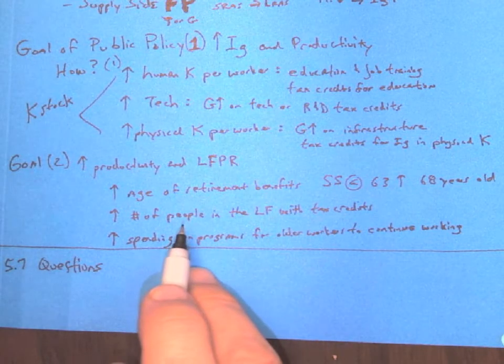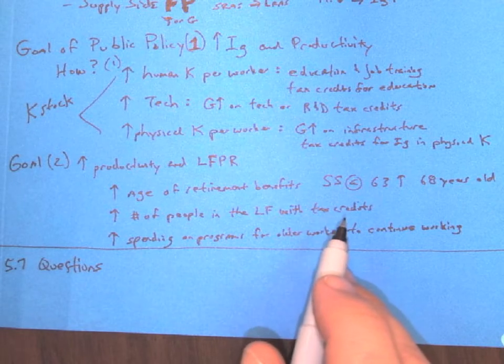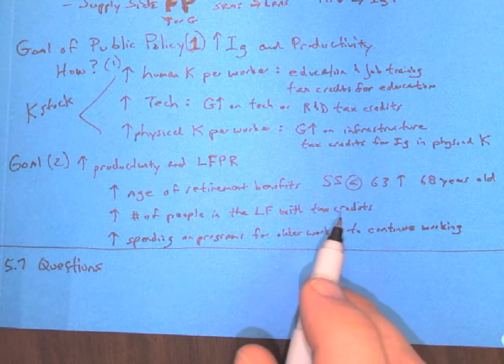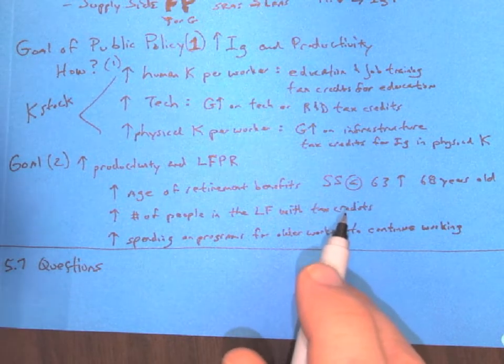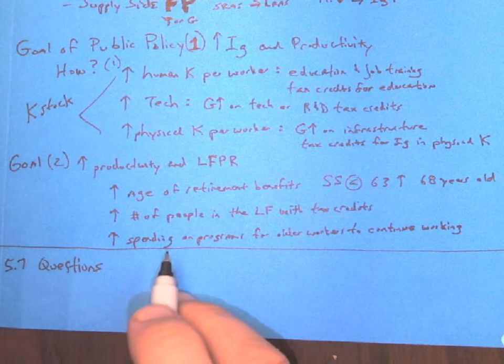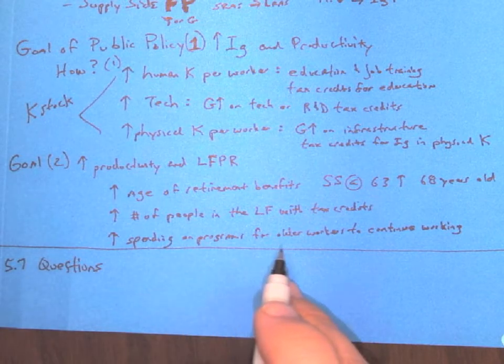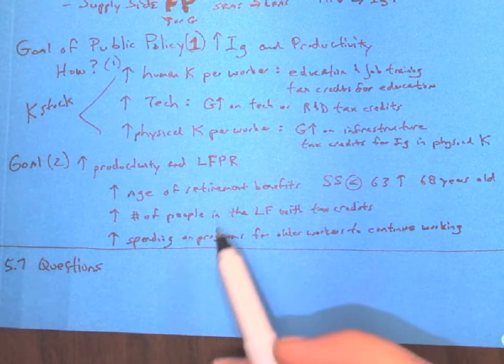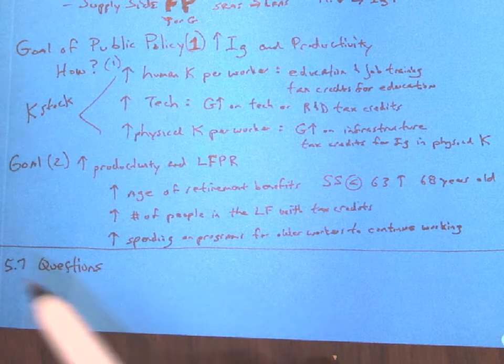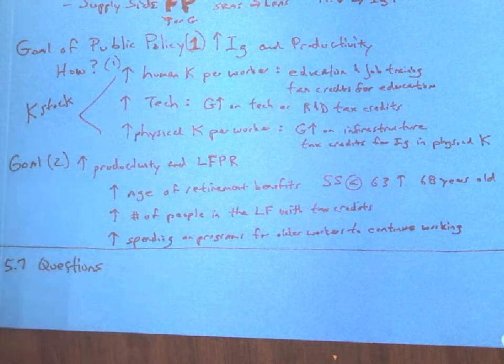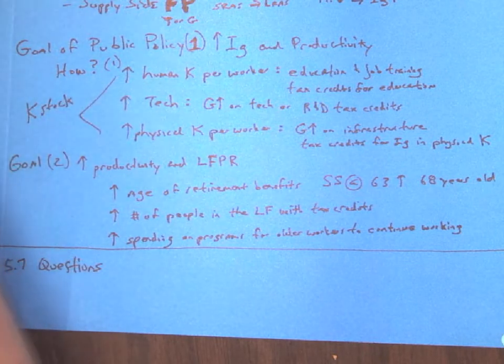We can also try to raise the number of people in the labor force with tax credits. And basically, those are age requirements. There are some to get people who are younger, who are disadvantaged, and there's some federal programs that have been around for those. We can increase spending on programs for older workers to continue working. And the longer your veteran laborers are in the labor force, the more productive they can be and keep adding to the economy. So those public policy items and growth can be addressed in your topic questions for 5.7.